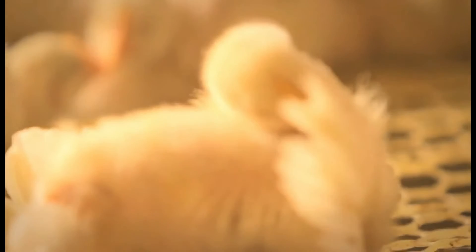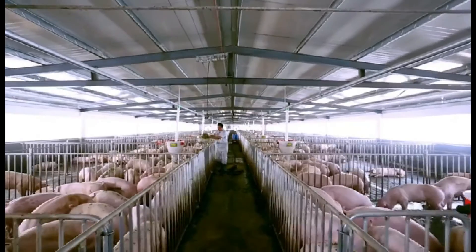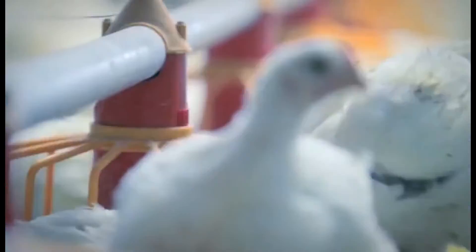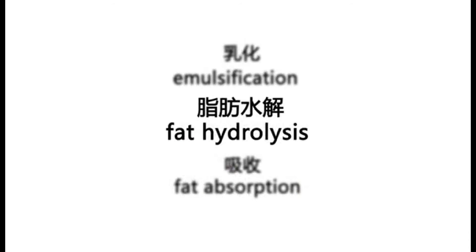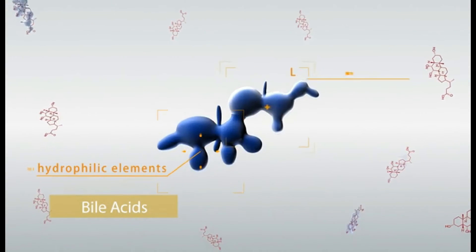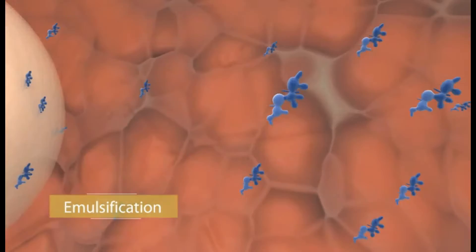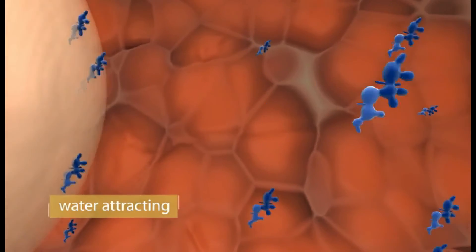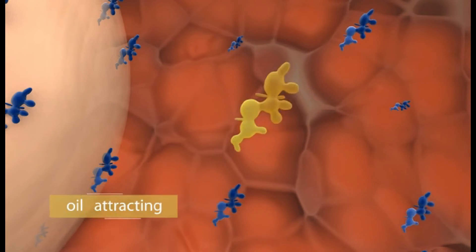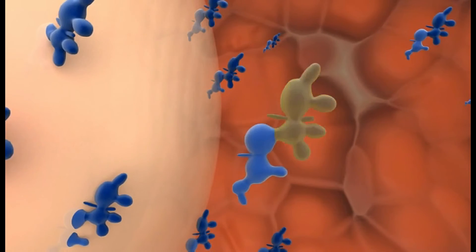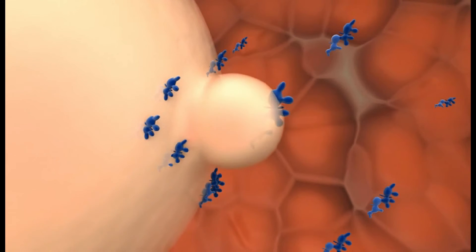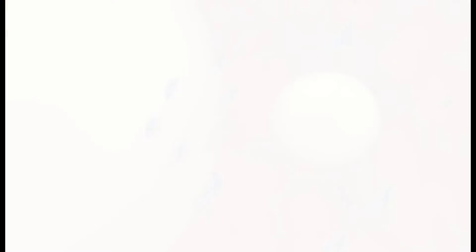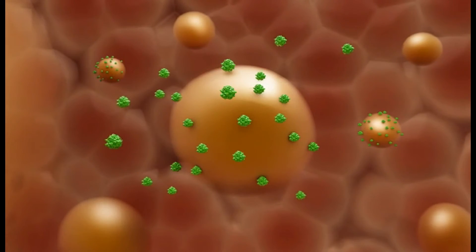In modern breeding, fat and oil content become more and more high in feed formulation. However, fat digestion is a complicated process with three steps: emulsification, digestion, and absorption. Different from emulsifiers, bile acids play an important role in all three steps. For emulsification, bile acids have a special structure combining hydrophilic and lipophilic elements. One side fixes in water and the other inserts into fat. In this way, fat can be emulsified into little droplets, which helps enlarge the contact area with lipase.